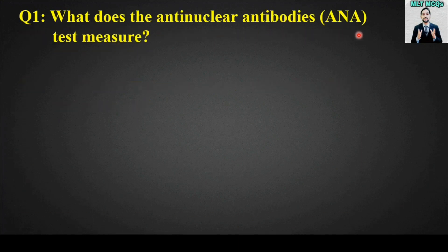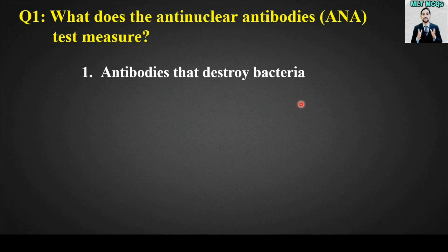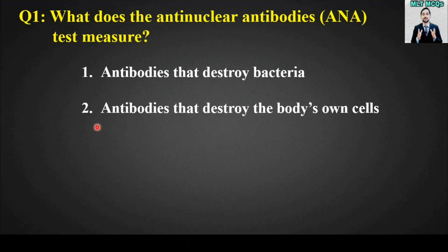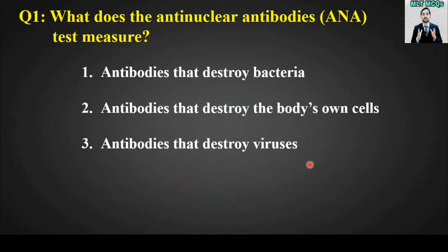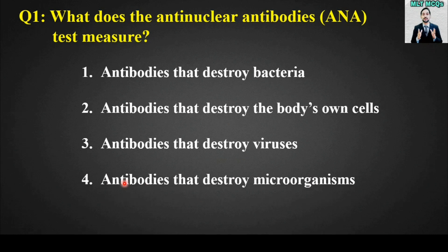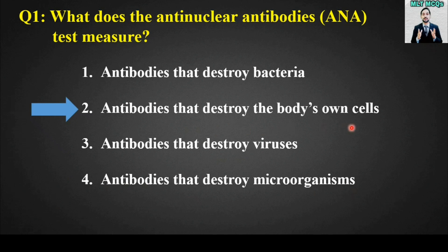MCQ number 1: What does the anti-nuclear antibodies (ANA) test measure? Options are: antibodies that destroy bacteria, antibodies that destroy the body's own cells, antibodies that destroy viruses, or antibodies that destroy microorganisms. The right answer is option number 2 — antibodies that destroy the body's own cells.